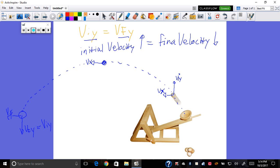So, the initial velocity up equals the final velocity down.